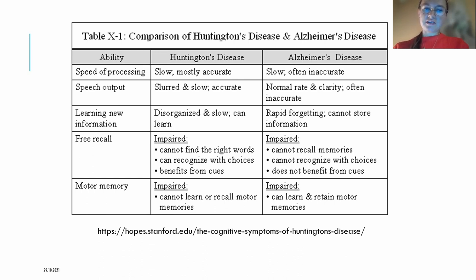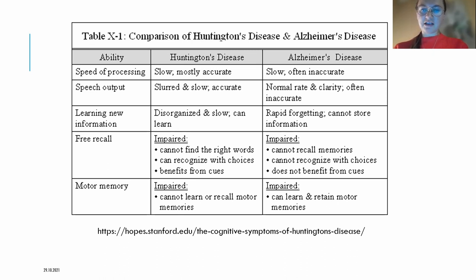There is also a difference when it comes to learning new information: in Huntington's disease it is disorganized and slow, but patients can learn. In Alzheimer's disease, the main symptom is rapid forgetting and patients cannot store information whatsoever. There are also other differences when it comes to free recall and motor memory.